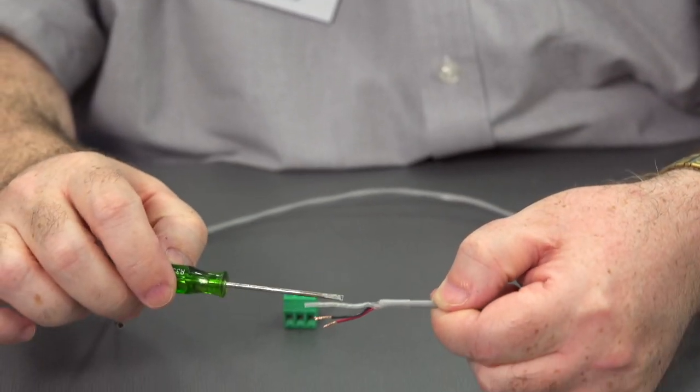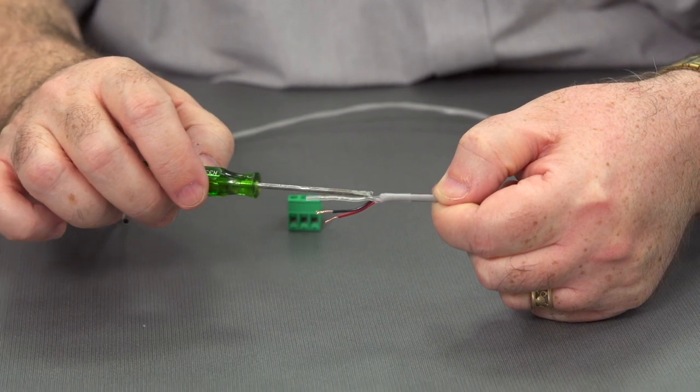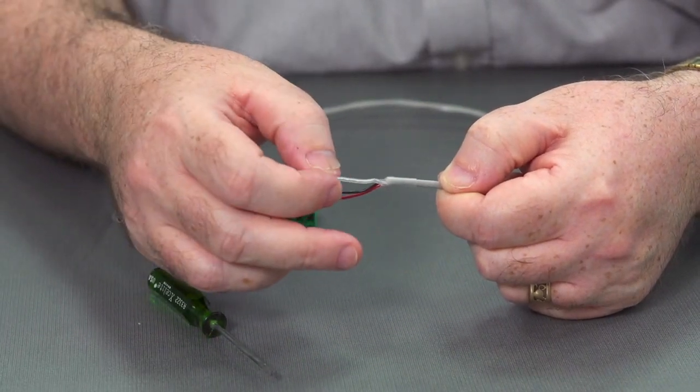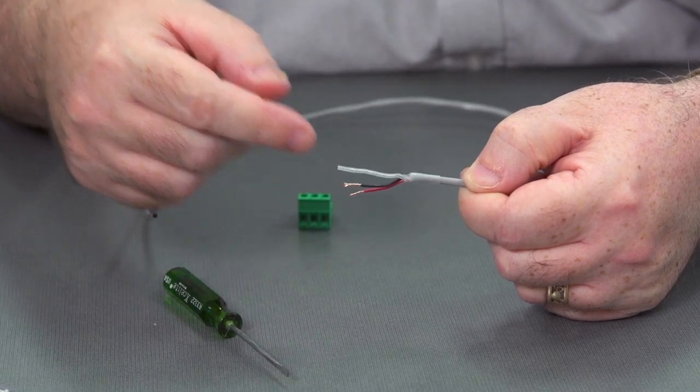Okay, now we've replaced the insulation on this bare wire. Now we have some covering over the top of it to protect it. We'll trim this back a little bit to match the other cables.